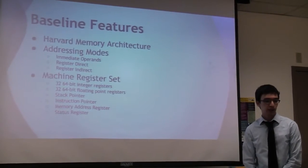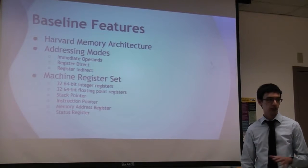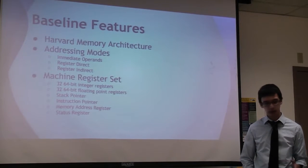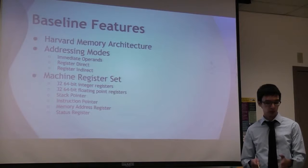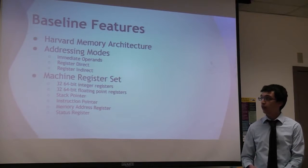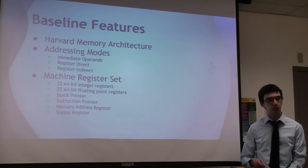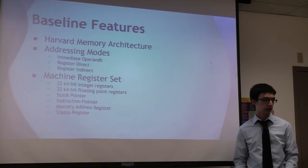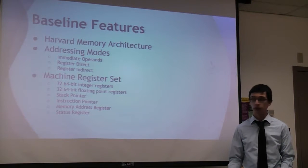The immediate allows us to take the value that is stored in the instruction and use it. Register direct points us directly to the register and then we use those registered contents. And then register indirect points to our register and we use that effective address to use the content that we'll use.